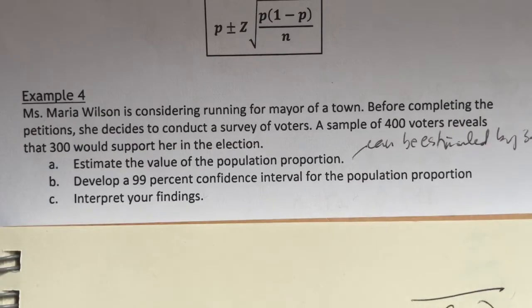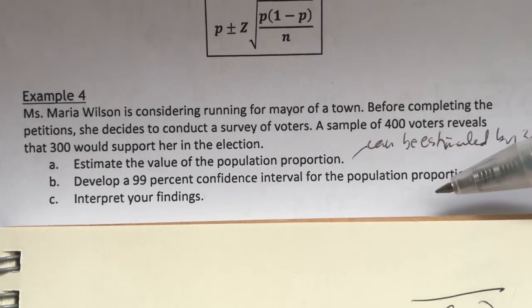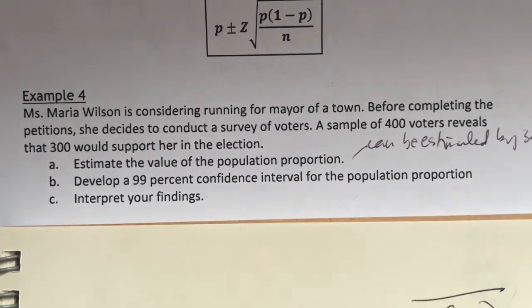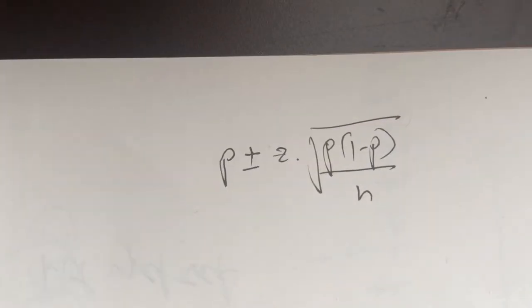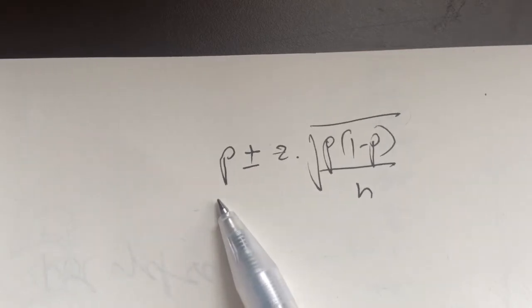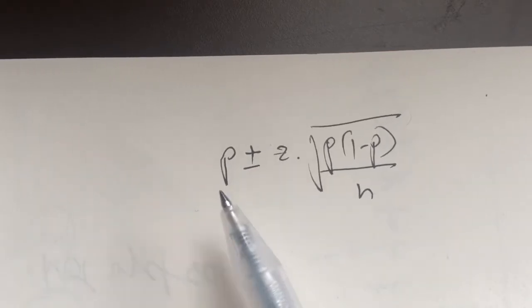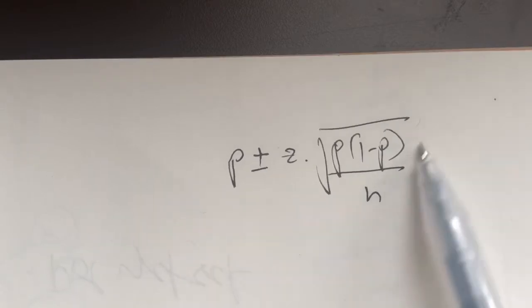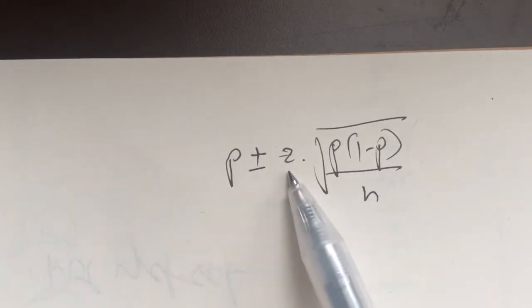Moving on to the next question: develop a 99% confidence interval for the population proportion. We write down the formula — as always, we begin with the point estimate. The point estimate for population proportion is the sample proportion p, plus minus the margin of error. The margin of error consists of two parts: the confidence level and the standard error.